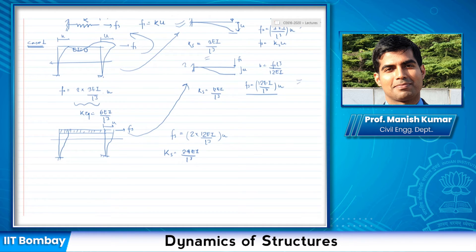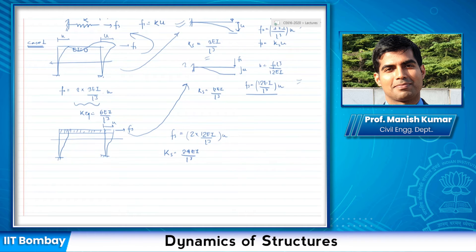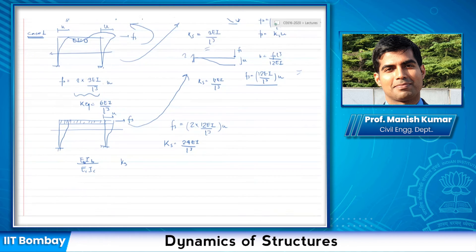These two extreme situations demonstrate how to find the stiffness of a frame. In reality the situation is somewhere in between — neither completely flexible nor completely rigid. There are formulas available based on the ratio of flexural rigidity of the beam to the flexural rigidity of the column that give the value of Ks. You can look that up in your textbook. We are focusing on the concept of deriving this spring-mass representation.